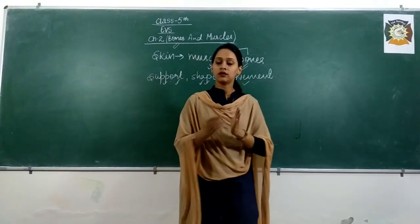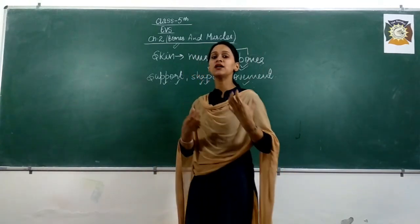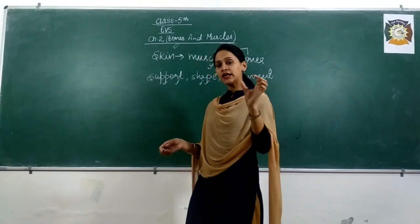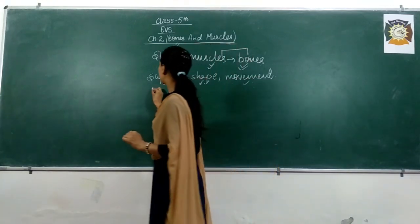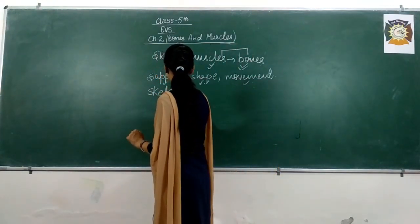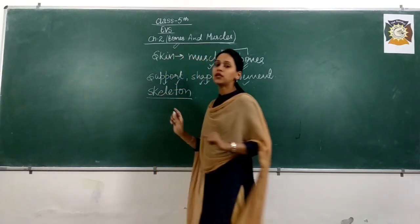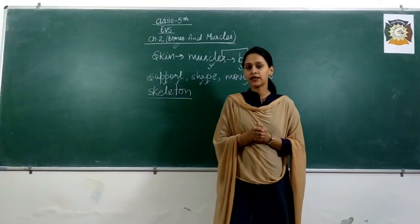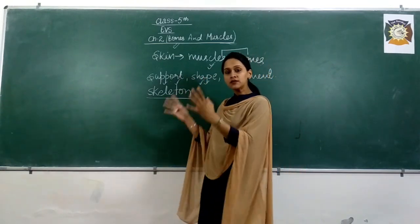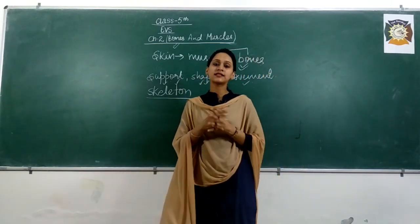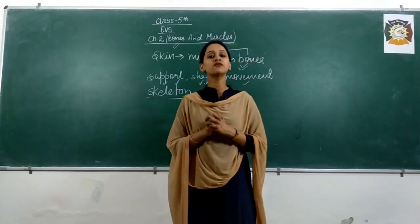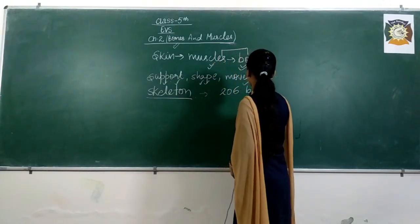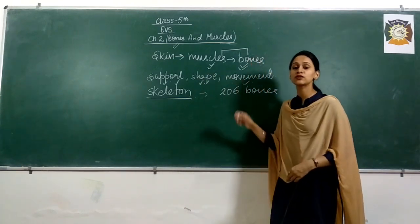If you give a name to all this framework of bones, all these bones are collectively given a single name which is known as the skeleton. So the skeleton is a framework of bones — all these bones together make a structure known as the skeleton. Skeleton is made up of bones. How many bones do we have in the body? We have 206 bones in the body.